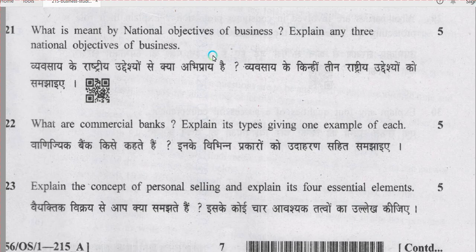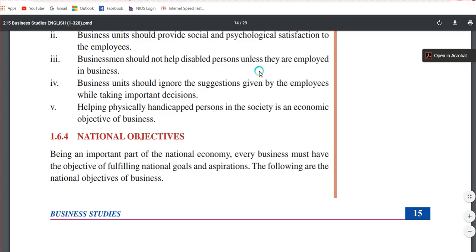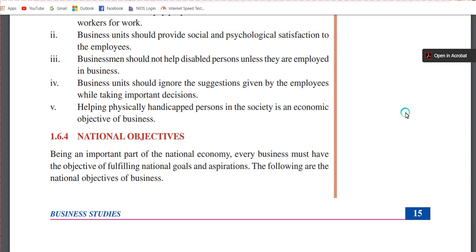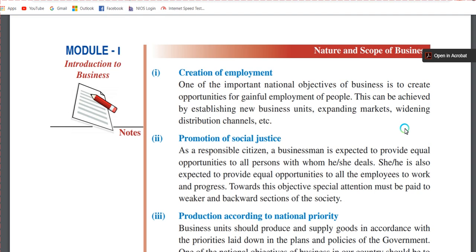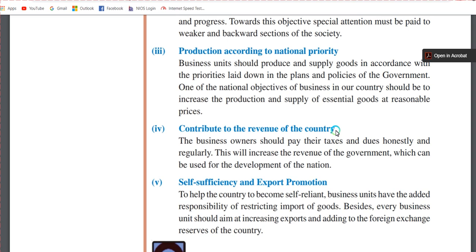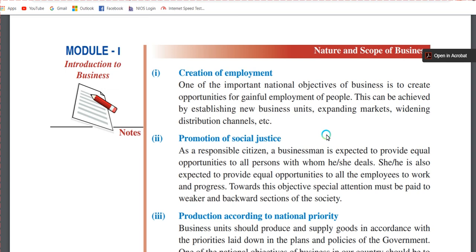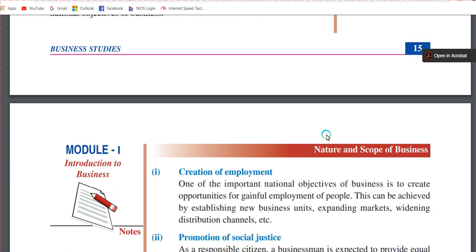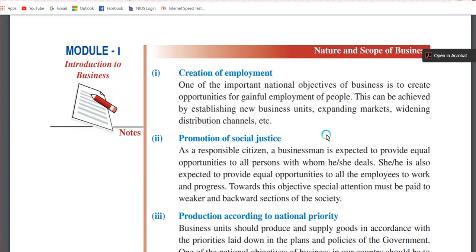Question number 21: what is meant by national objectives of business — explain any three. From chapter 1, the fourth type of business objective is national objectives — all those objectives a business has towards its nation. Page number 15 mentions national objectives such as creation of employment, generation of employment opportunities, promotion of social justice, production according to national priority, contribution to the revenue of the country, and self-sufficiency and export promotion. Since it is of five marks you can mention five national objectives.